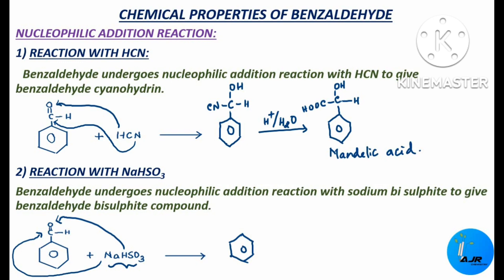Let me write the product now — benzene ring, carbon, here we have H, this hydrogen gets added up to give OH and the rest is SO3Na. So this is the product. This is benzaldehyde sodium bisulphite.